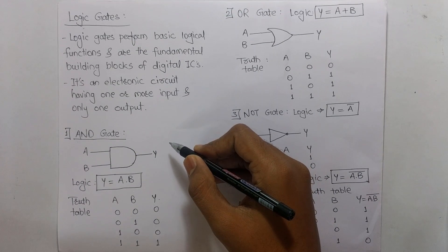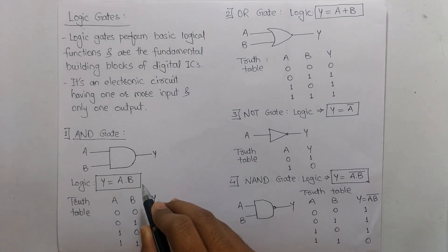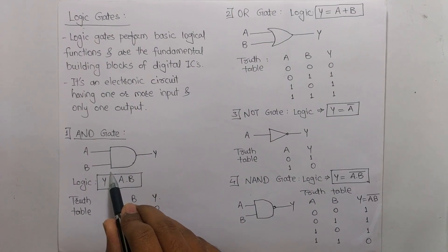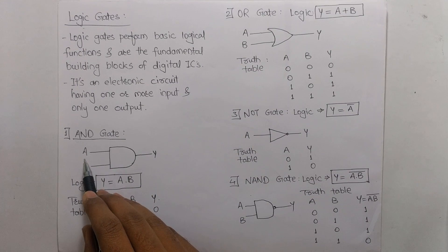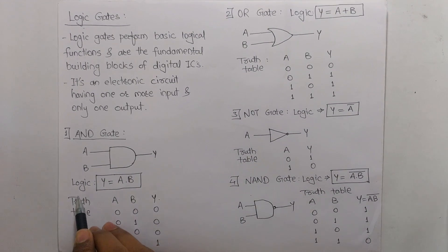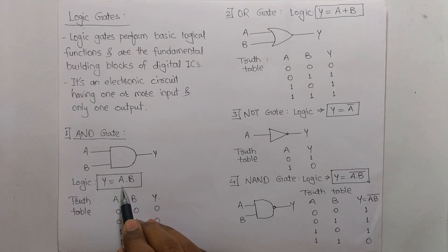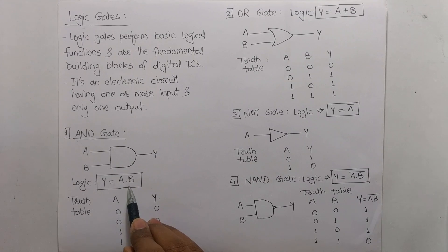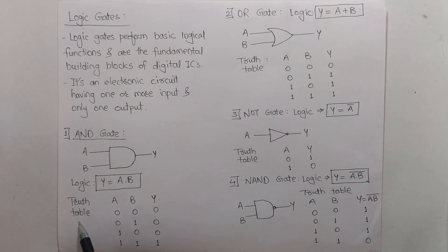The first gate we are going to see is the AND gate. This is the symbol of AND gate, shaped like a D. A and B are inputs, and Y is the output. The logic of AND gate is: both inputs should be 1, then only the output will be 1. We will prove this with a truth table.